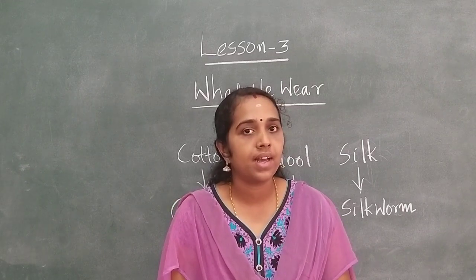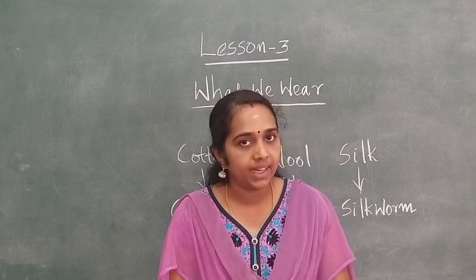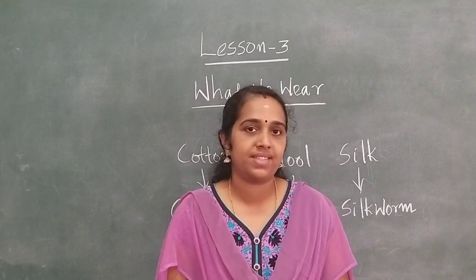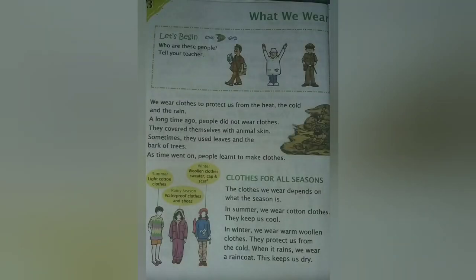Now we will sit together and read the lesson. While reading, we will underline the difficult words. Lesson number 3: What We Wear. We wear clothes to protect us from the heat, the cold and the rain. Underline the words heat, cold and rain. A long time ago, people did not wear clothes — underline the word wear. They covered themselves with animal skin. Sometimes they used leaves and the bark of trees. As time went on, people learned to make clothes.